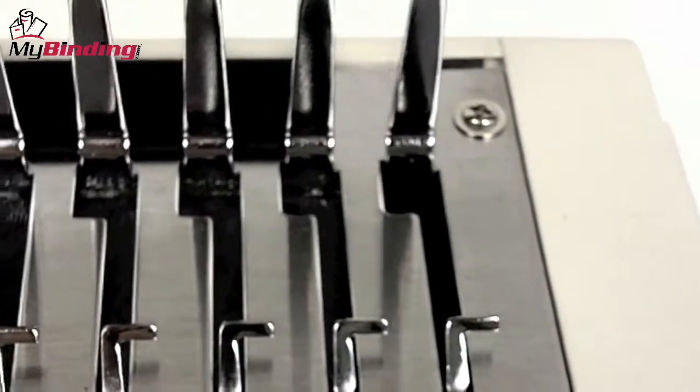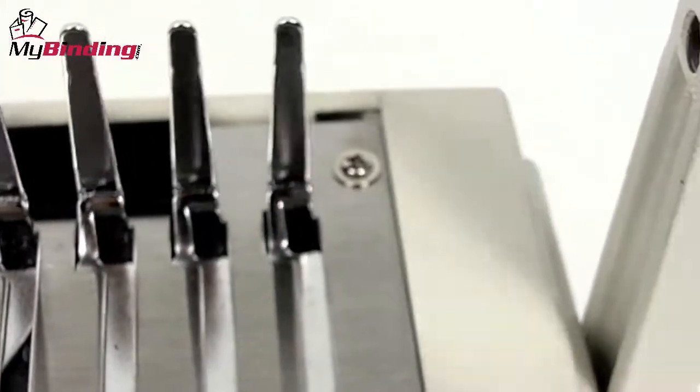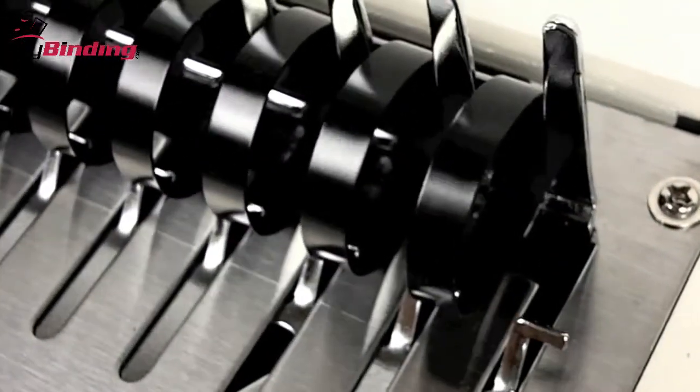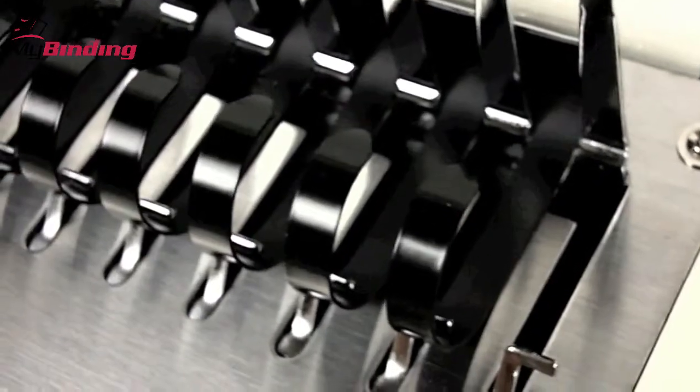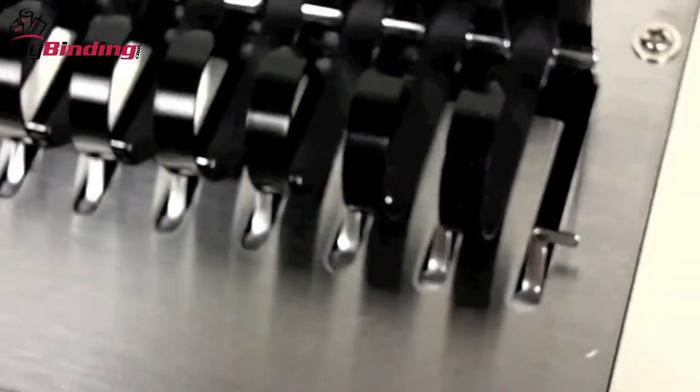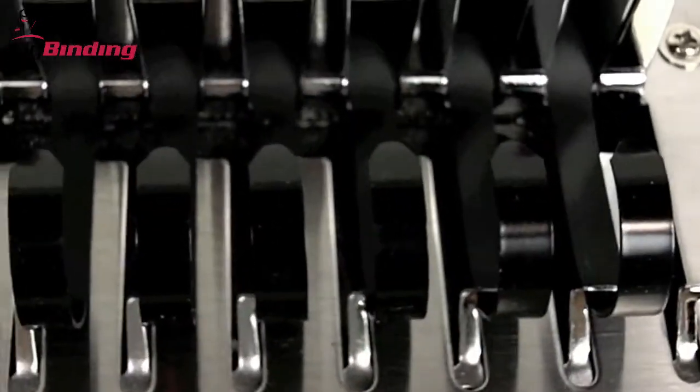These features make it possible to bind documents with plastic combs that are as small as 3-16th of an inch and as large as 2 inches in diameter. This means that it can bind documents up to 425 pages of 20-pound paper.